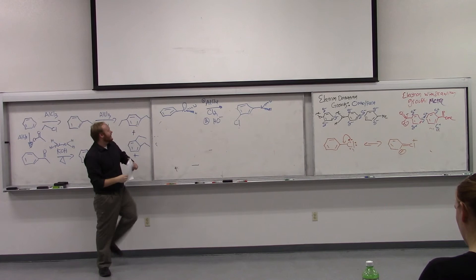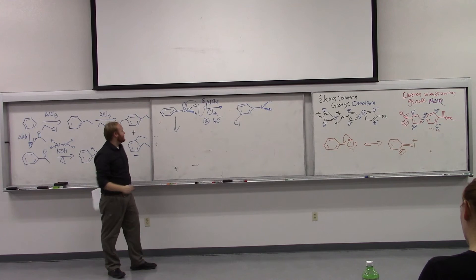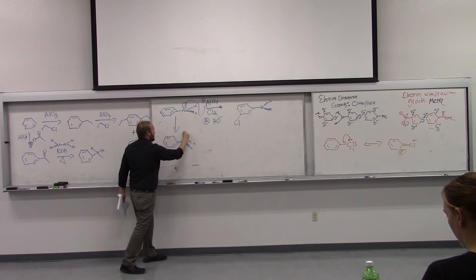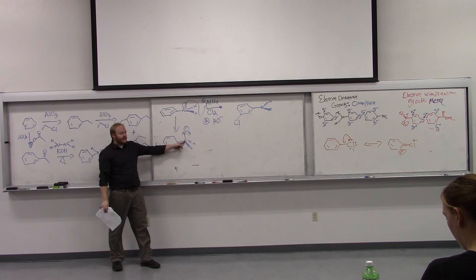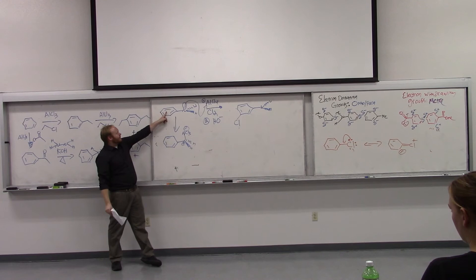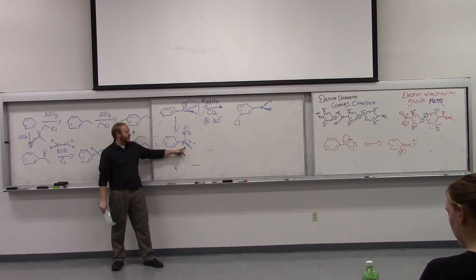All right, so pretty much what happens is the first thing that's going to happen is actually that the more reactive lone pair of electrons on the nitrogen are going to attack the Lewis acid. All right. And so now we have a positive charge on the nitrogen. And so now, because we formed this adduct between our nitrogen and the amine, and so this is the problem with the anilines. They're too reactive.